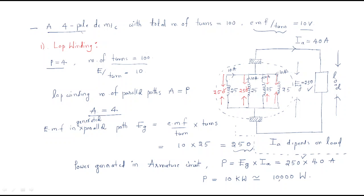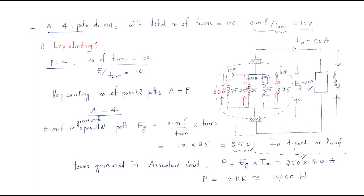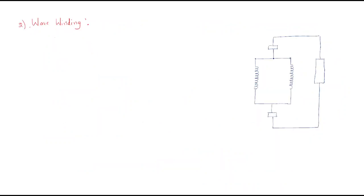In the last session we discussed the lap winding example. We considered a four-pole DC machine with 100 turns and EMF per turn of 10 ohms. Now with the same parameters connected in wave winding, we need to discuss what modifications occur and what voltage and current changes result.